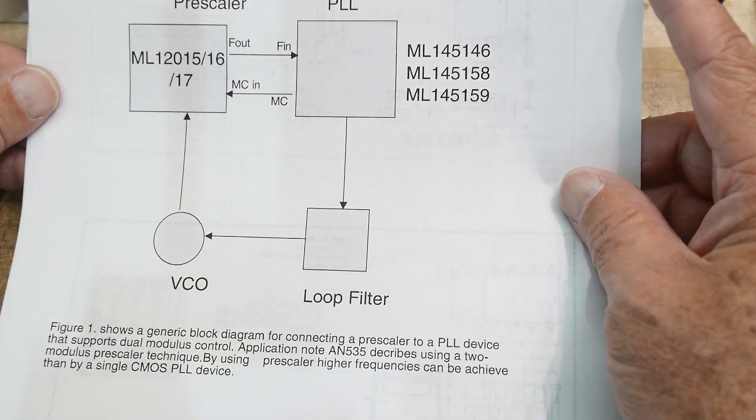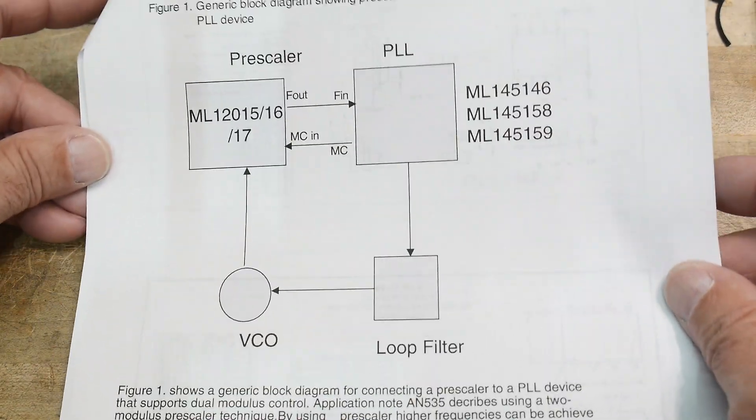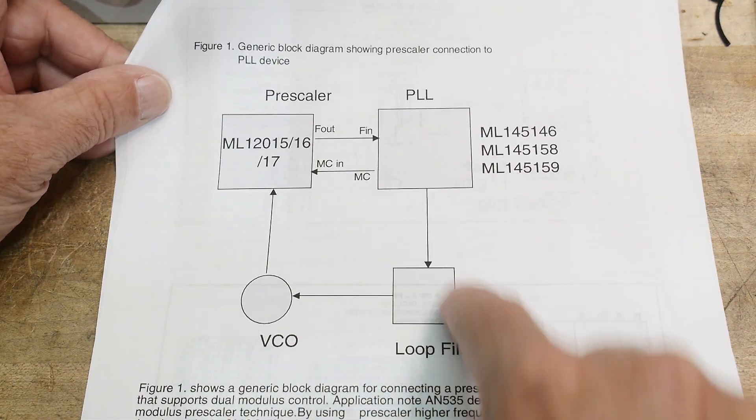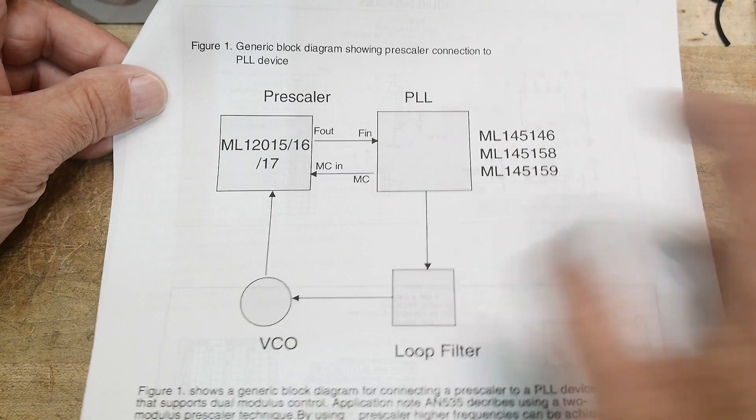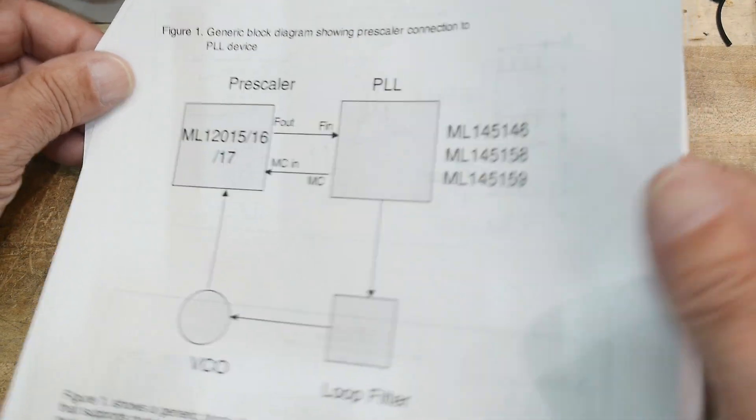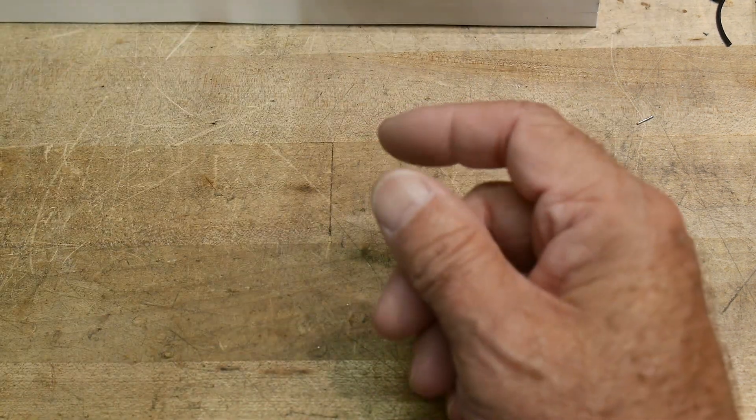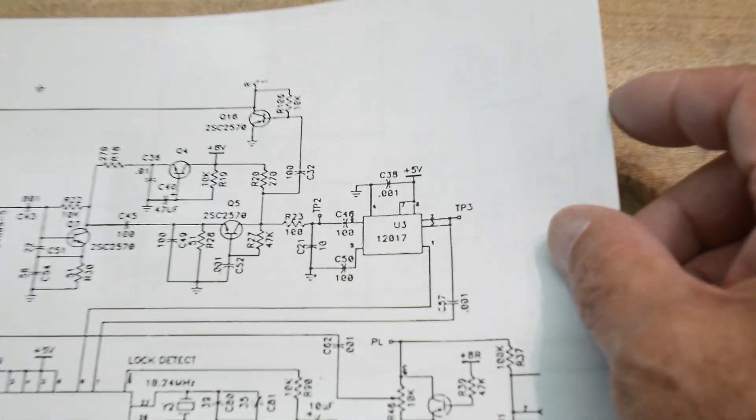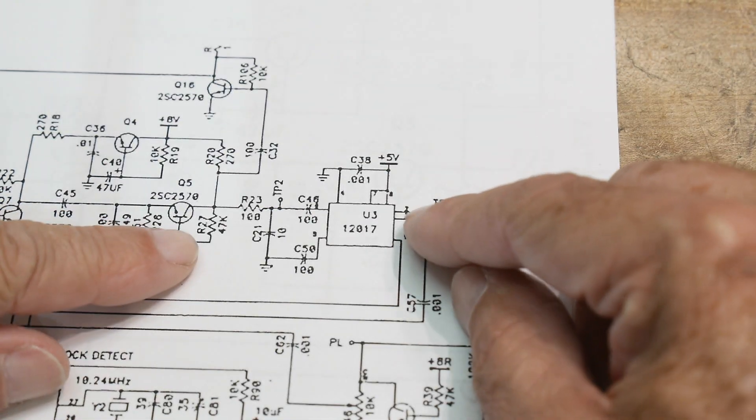All right. So let's see how this thing, oh, okay. This shows a typical application. In fact, this is the application that we have. There's a prescaler. It goes into a phase lock loop. You get a loop filter VCO and it comes back around. So we'll get to that later on ours, but that's what this part's meant for. And that's how it's being used. So let's look down here at ours.